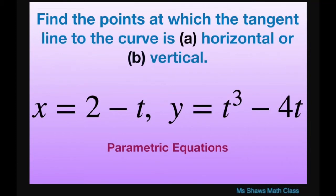Hi everyone. We're going to find the points at which the tangent line to the curve is horizontal for part a, and for part b, vertical.